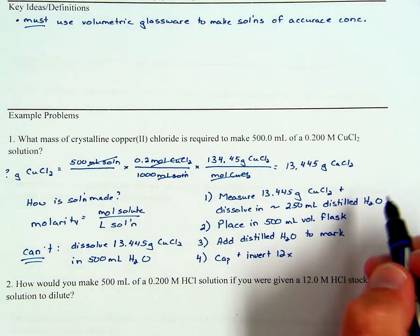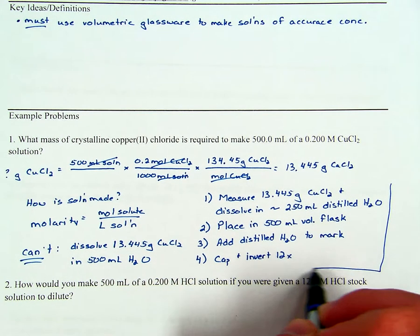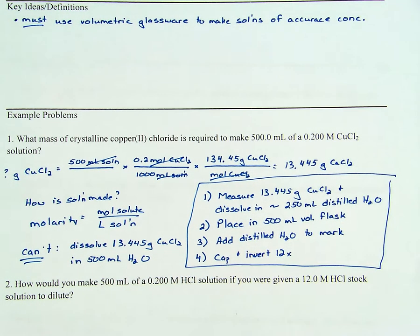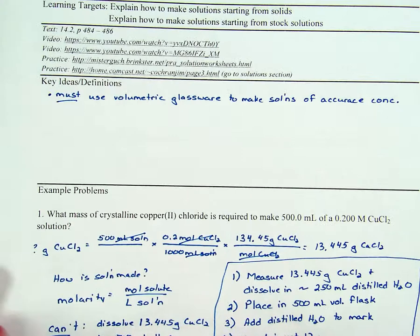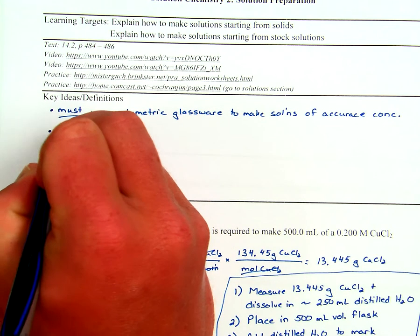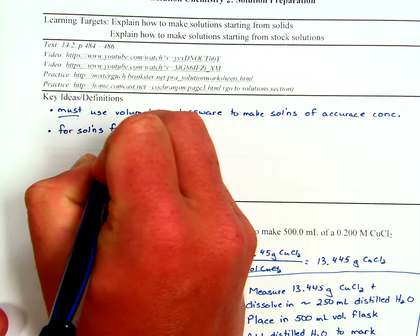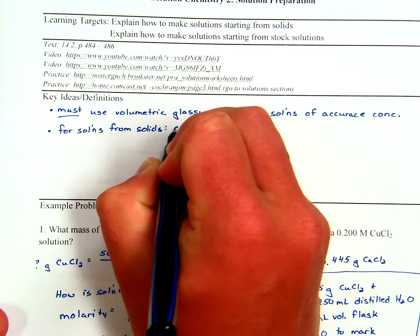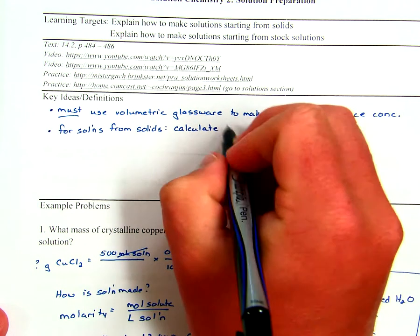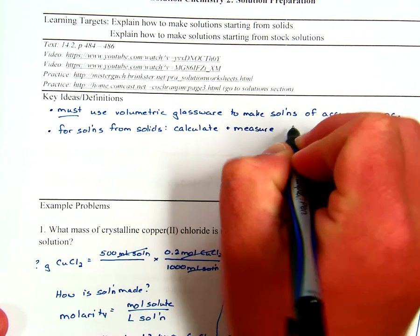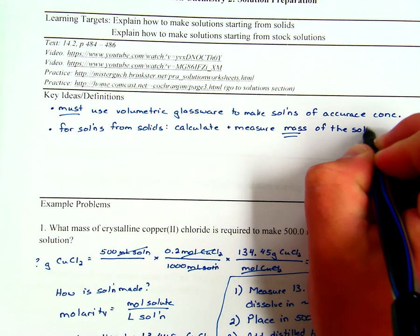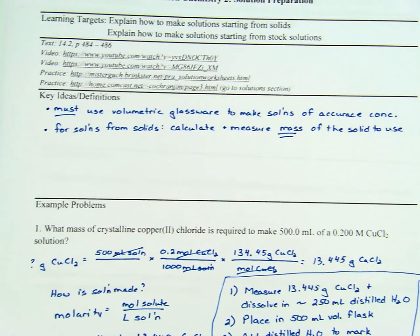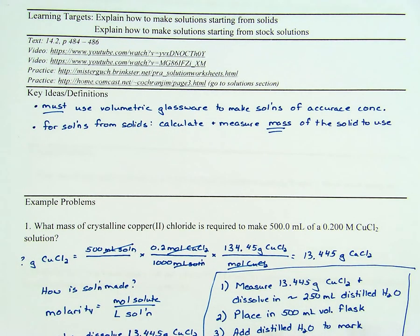So that answers how we make it — we had to do the first calculation to figure out how much copper chloride to use, and from there this is how we'd actually make it. This basic procedure applies any time we're making a solution from a solid or crystalline substance: calculate and measure the mass of the solid to use, then go through the volumetric glassware steps as shown.